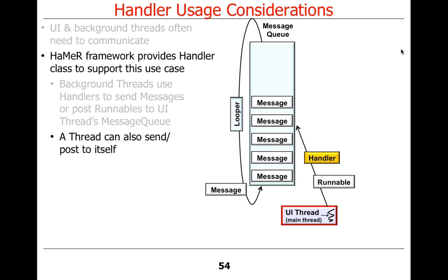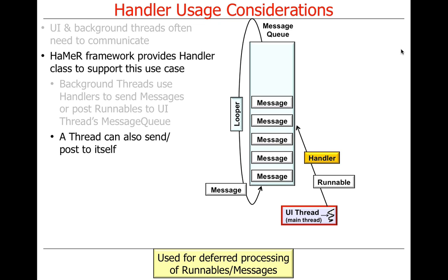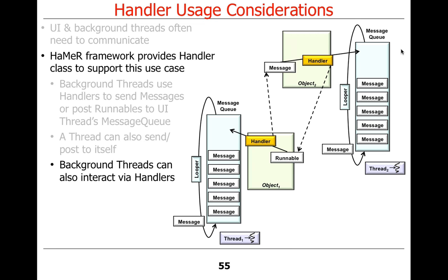In addition to background threads sending stuff to the UI thread, threads can also send messages or post runnables to themselves. The most typical reason for doing this is to defer processing — if you're doing work and can't make more progress or don't want to block, you can create a message and enqueue it using post or send message to process it again at a later point. That's another use case, though not as interesting from a concurrency point of view.